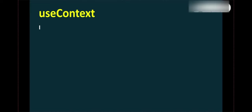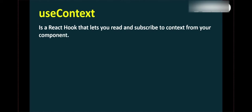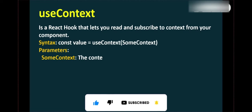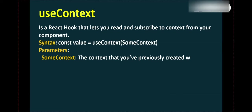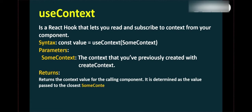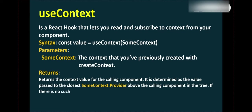Next is useContext. useContext is a React hook that lets you read and subscribe to context from your component. It takes one parameter — the context that you previously created with createContext — and returns the context value for the calling component. The value is determined by the closest provider above the calling component in the tree. If there is no such provider, the return value will be the default value passed to createContext.